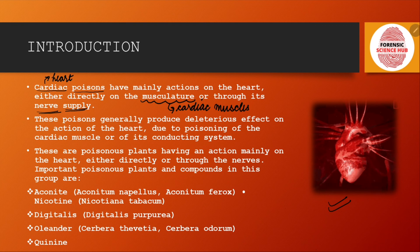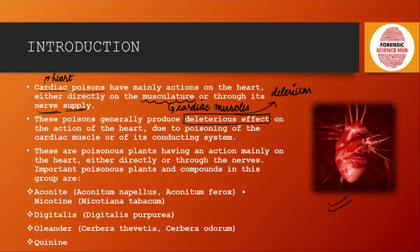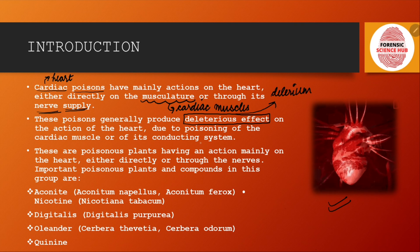These poisons generally produce deleterious effects. Deleterious effects means they are going to produce a situation of delirium — a mental abnormality in which the person is confused or has reduced awareness of what's happening around them. So these cardiac poisons are responsible for producing deleterious effects on the action of the heart due to poisoning of the cardiac muscle or of its conducting system.